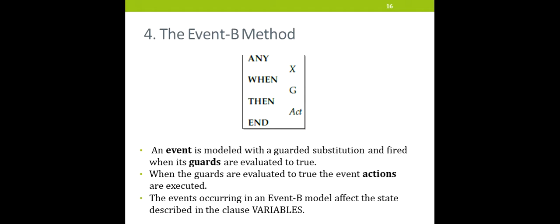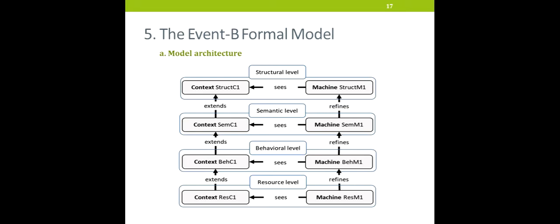We move now to the presentation of our formal model. We start by our model architecture that contains four levels. The first level is constructed by the structure machine and models the structural properties of the cloud composite service. The semantic machine models the semantic properties. The behavior machine models the behavior properties. And the resource machine adds details about the resource allocation.